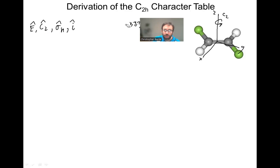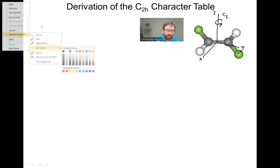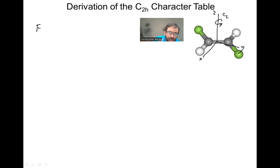We only have four operations. All these operations are very different functionally, so they're going to all be in separate classes. Identity and inversion are always in their own classes. One of these is a mirror plane and one of them is a rotation, so those are very different — mirror planes and rotations are always in separate classes. In other videos I go over more complicated cases when deriving more complicated character tables. In this case, they're all four in separate classes.